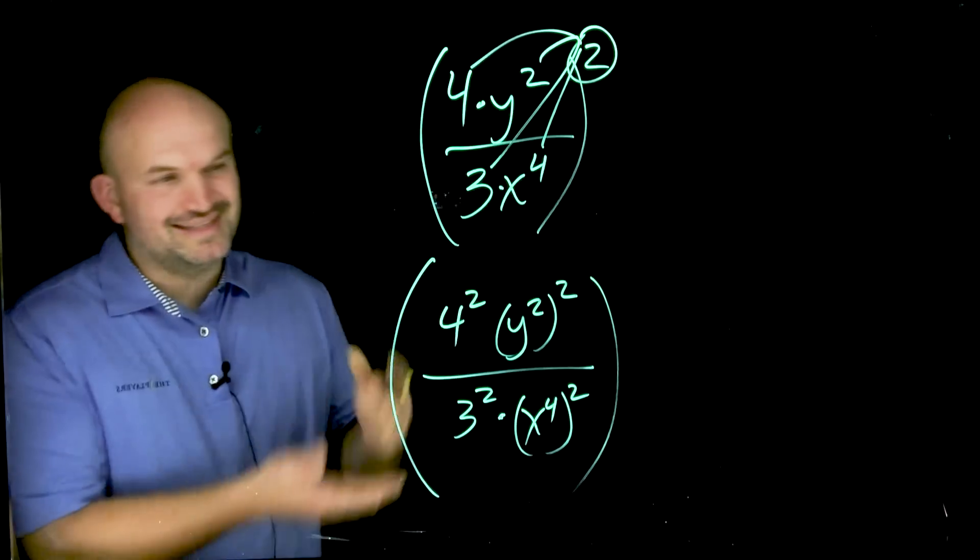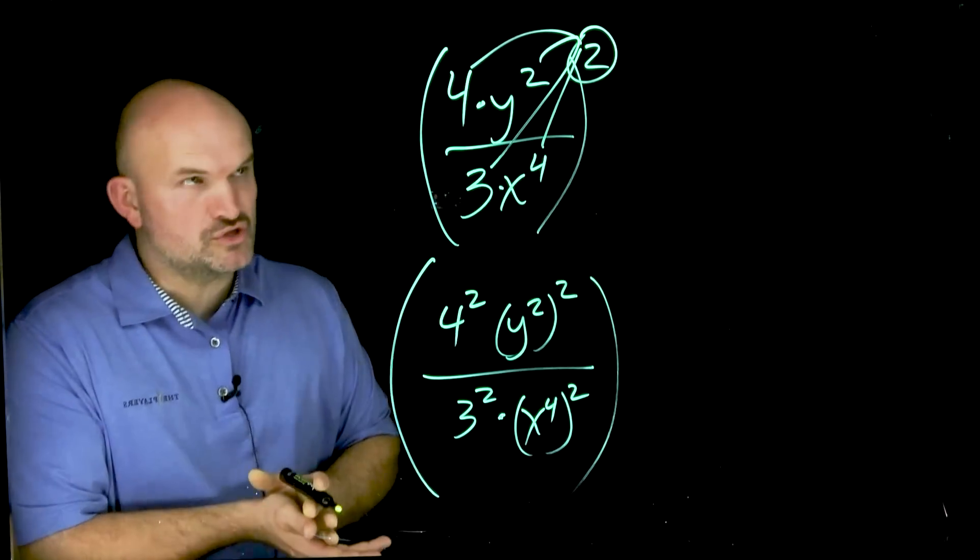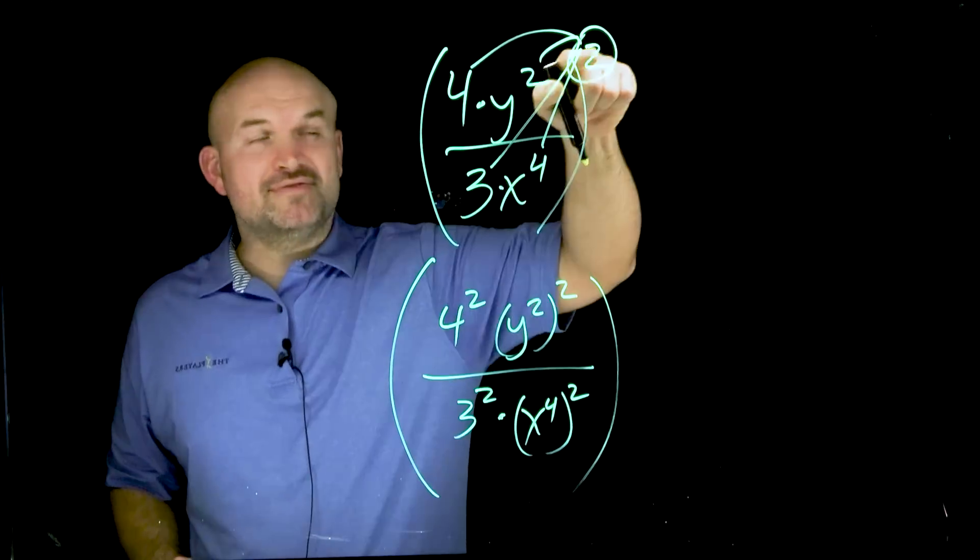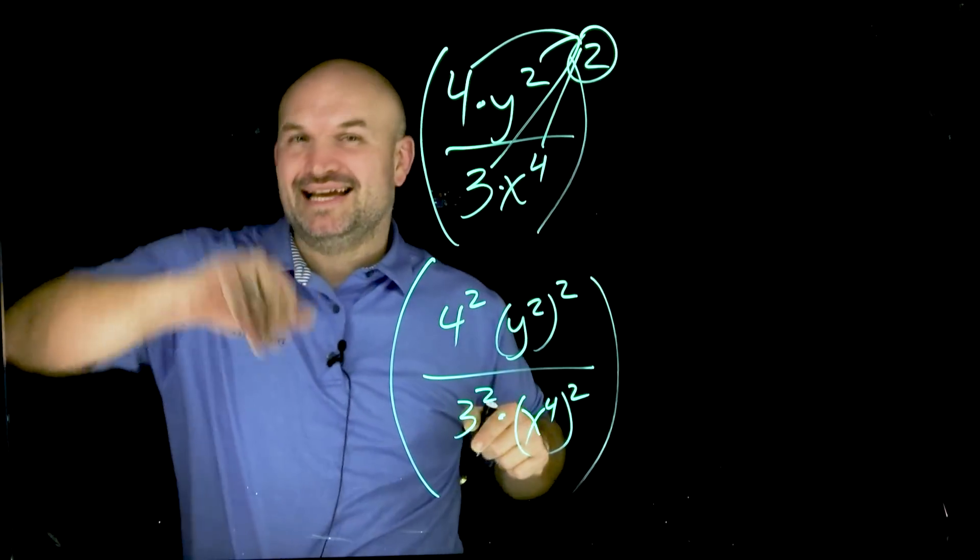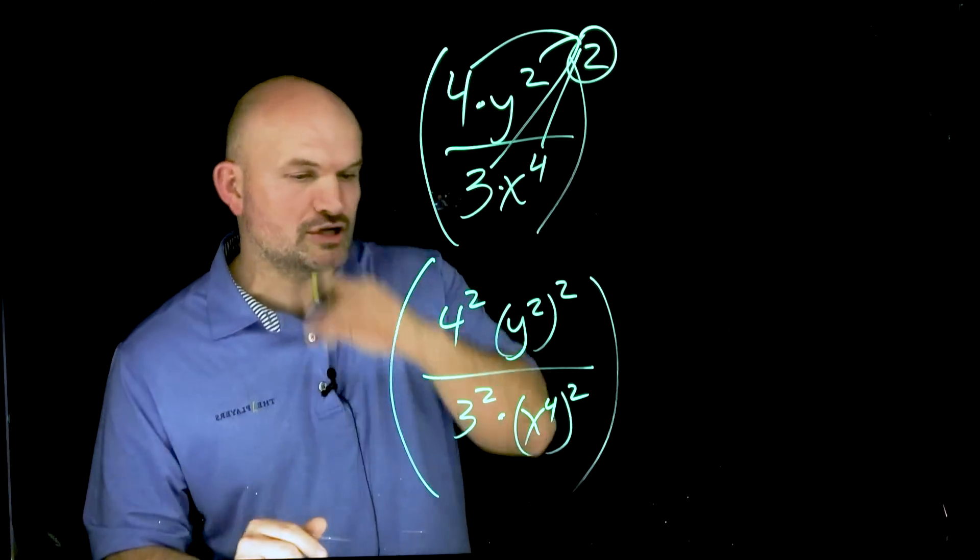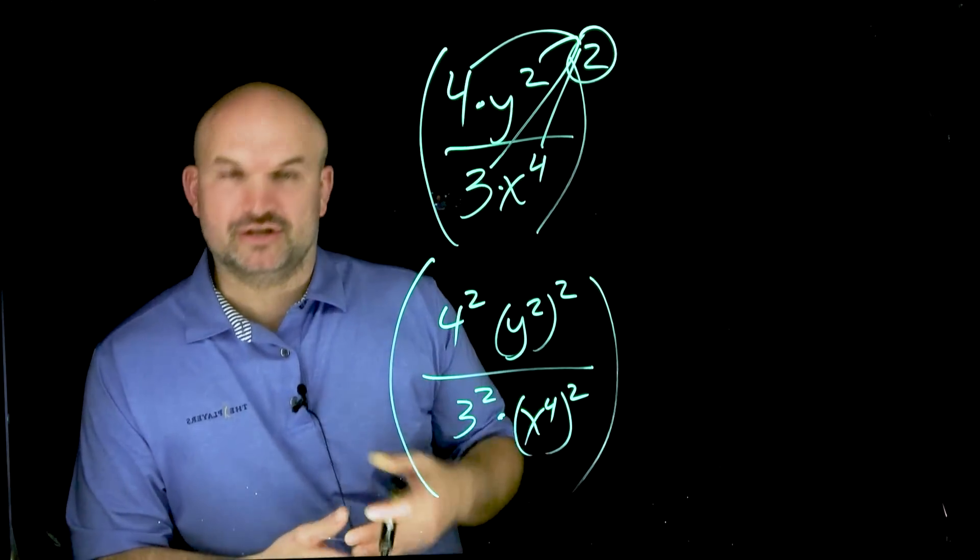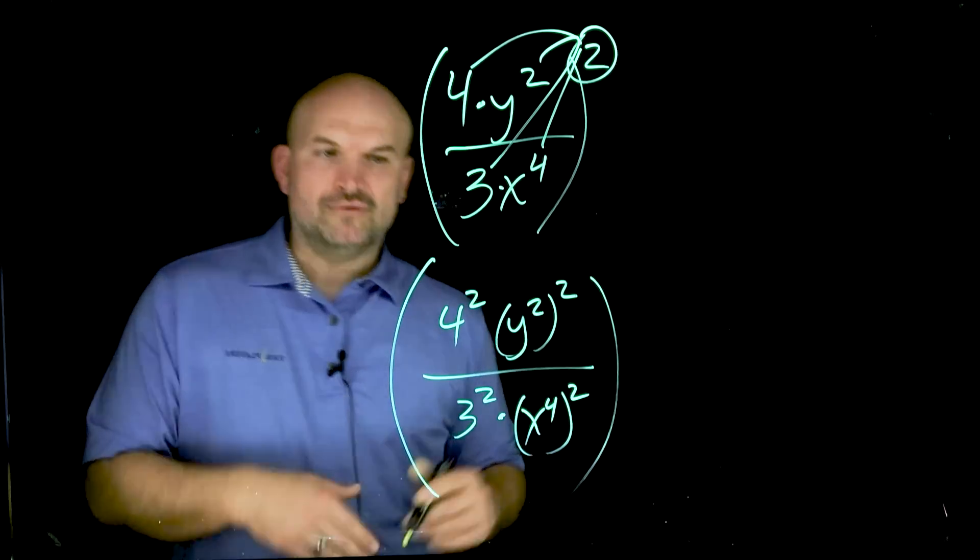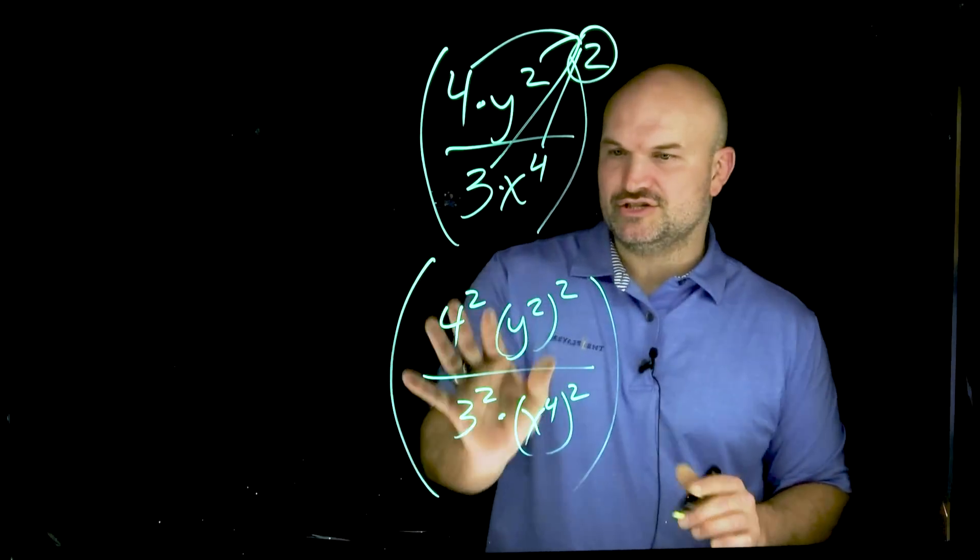So just remember, again, this is the power to product and power to quotient rule. When you have an expression raised to a power, make sure you distribute that power to each and every term inside the expression. Now, there's a caveat to that that is only going to work when your terms are separated by multiplication, not when your terms are separated by addition or subtraction. However, now we can just go ahead and simplify each of these terms separately.